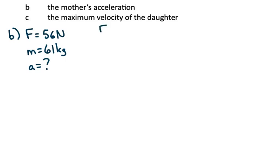Using F equals ma again, substituting in 56 and 61. Again, we divide this out, we need two sig figs. The mother's acceleration is 0.92 meters per second squared.